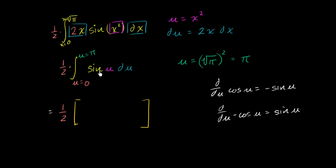So the antiderivative of sine of u is negative cosine of u.